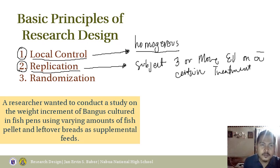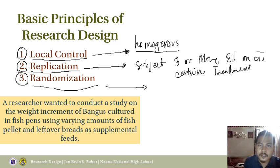Number three is randomization. Randomization is assigning random numbers or random experimental units to a specific treatment. For example, you have three treatments: T1, T2, and T3.